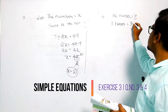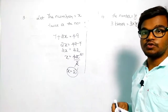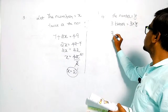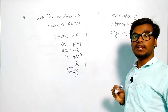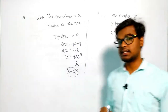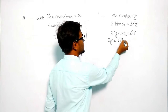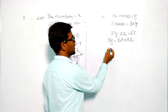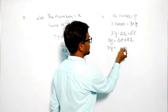3 times the number means 3 into y, that is 3y. Next, if we subtract 22 from 3y, we get 3y minus 22 equals 68. So 3y equals 68 plus 22, which is 90.